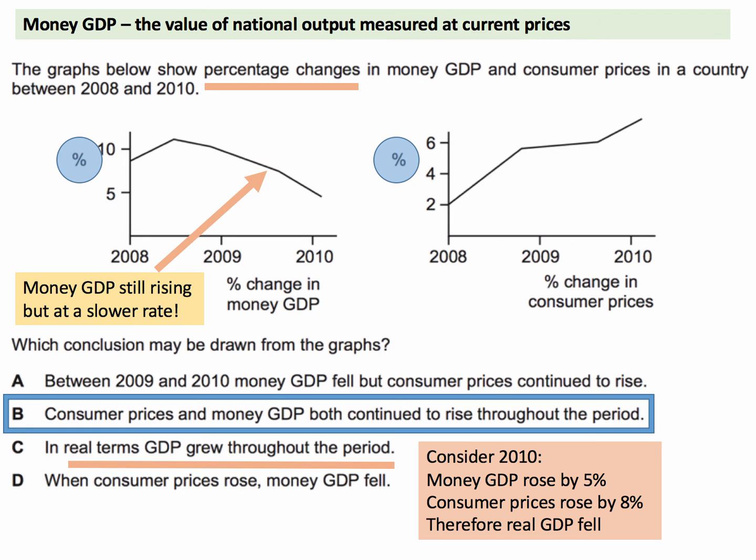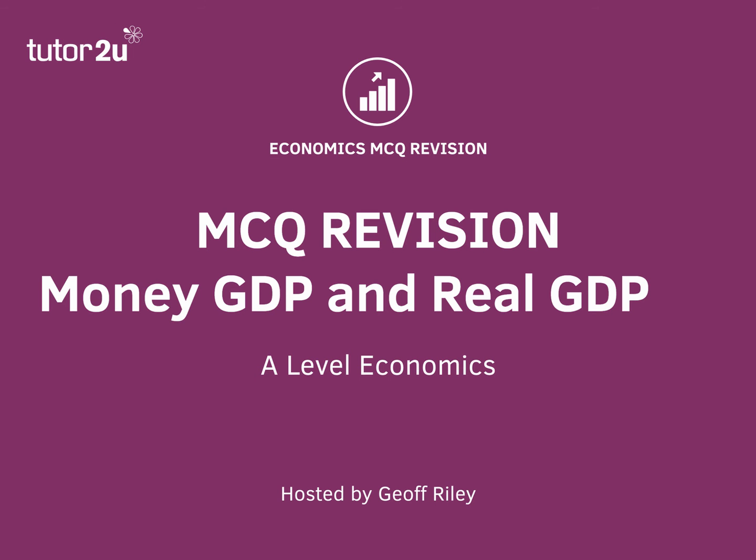The key to getting this answer right is to look carefully at the chart — it shows the percentage change in both variables rather than the level. A lot of students make a confusion between levels and rate of change. Hopefully going through this question will help you avoid that mistake so you can get the right answer when it comes up in an exam. Thanks for joining in. Check out our daily question for more tests of your economics understanding.